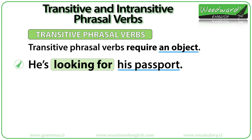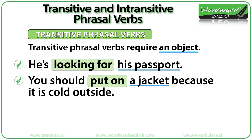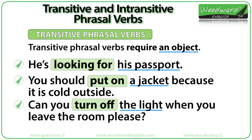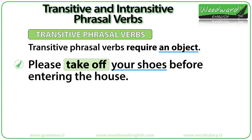Here are more examples of transitive phrasal verbs in sentences: "He's looking for his passport" — his passport is the object. "You should put on a jacket because it's cold outside." "Can you turn off the light when you leave the room, please?" "Please take off your shoes before entering the house." The object appears after the transitive verb, as we have seen so far.